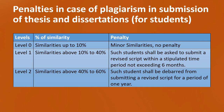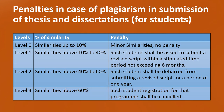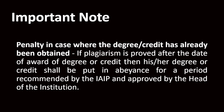The second level of plagiarism is when the similarity is above 40% — such students can be debarred from submitting a revised script for a period of 1 year, which will ultimately increase the duration of their degree. If the similarity is above 60%, even if the committee finds it is a very serious type of plagiarism, such a student's registration from the program can be cancelled. It is very important to note that if plagiarism is proved after the date of award of the degree or credit, then the degree and credit shall be put on abeyance for a period recommended by the IAIP and approved by the head of the institution.